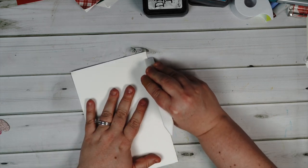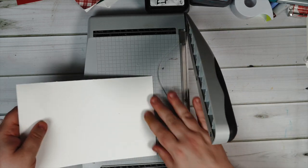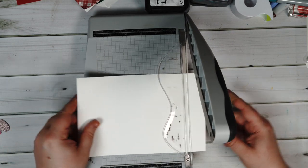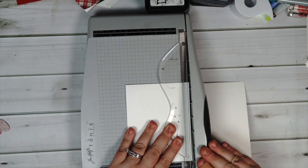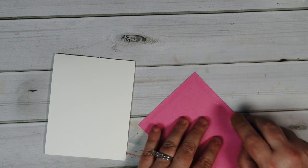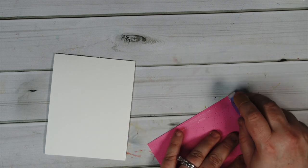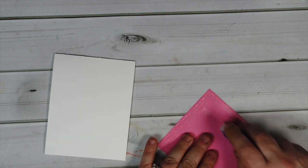Next I'm making a simple A2 size card base. I folded a standard sheet of cardstock in half and then I'm just going over to my trimmer and cutting it down at four and a quarter. I did use my cat scrappiness bone folder to crease it and it works awesome with that flat tip edge.